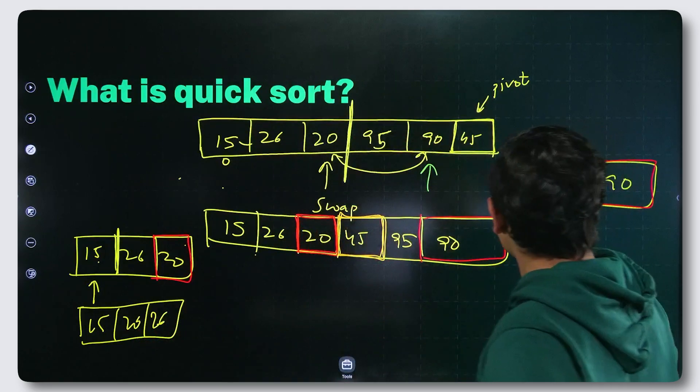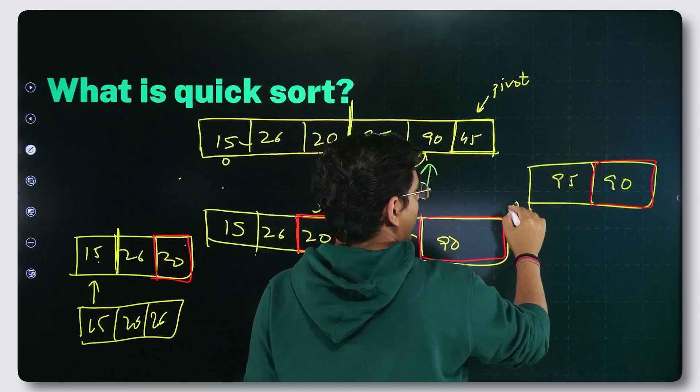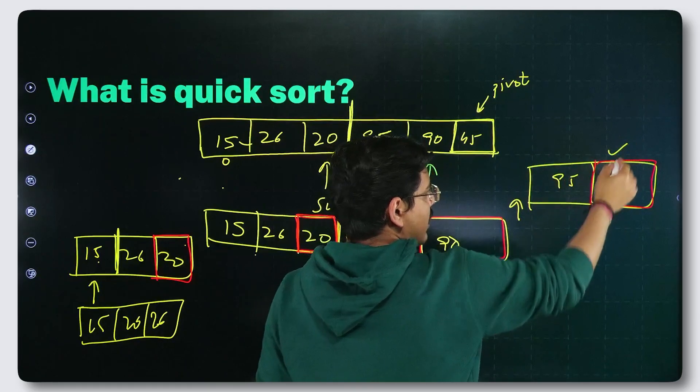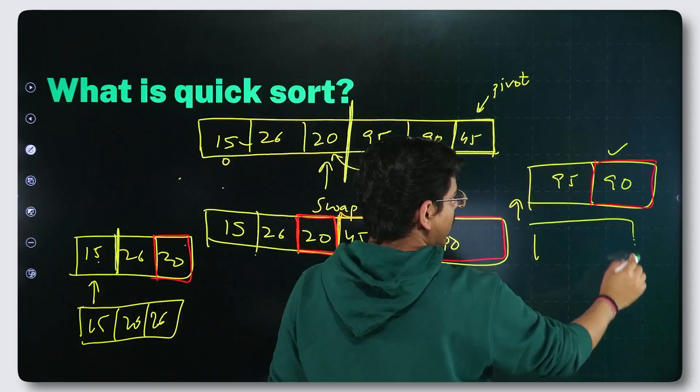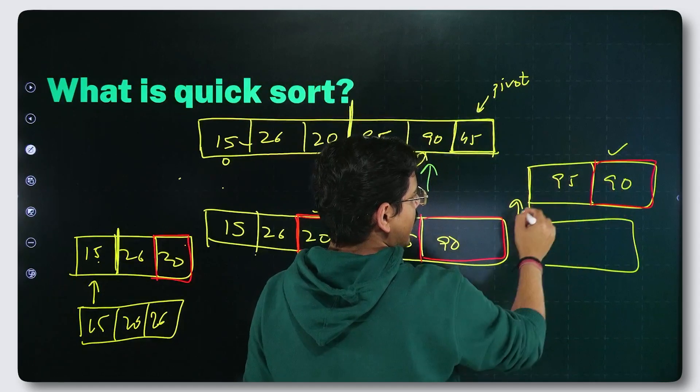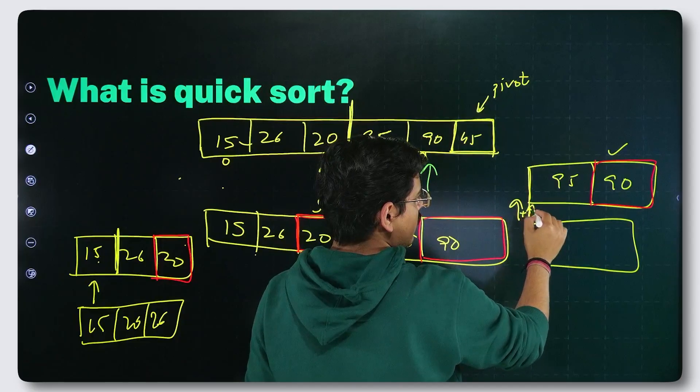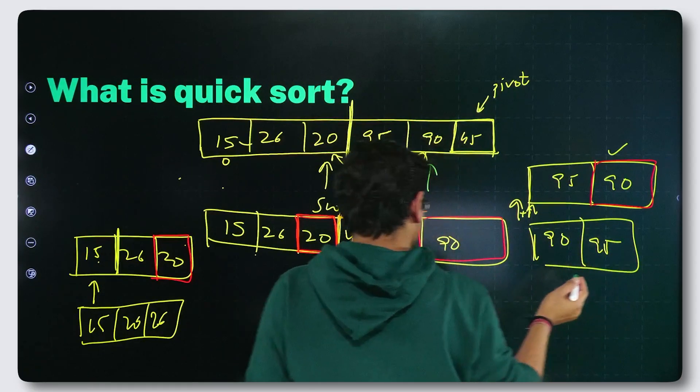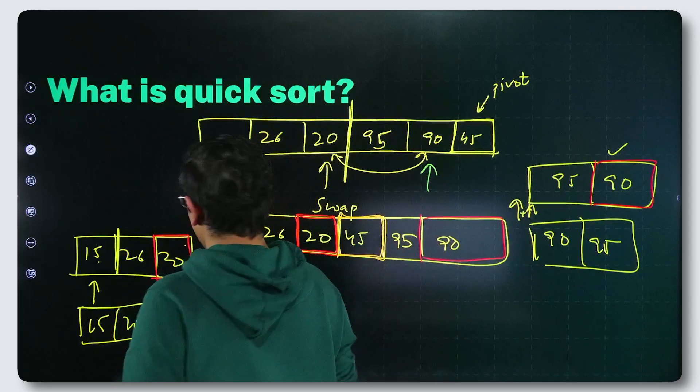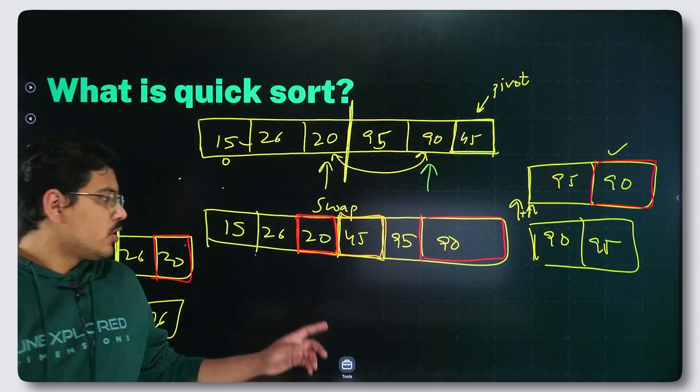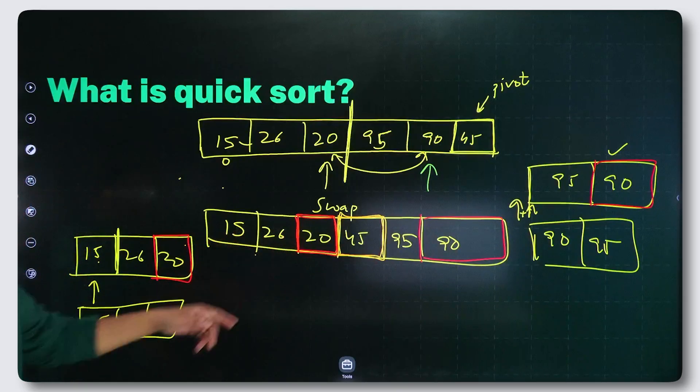And similarly, in this case, if I see swap pointers here, I see that this particular number is already greater than the pivot that I fixed. So I found that pivot's correct places. Here, after this, I told you to increment the swap pointer. So this is the correct place for pivot, 90 and 95. So in this case, if I tell you that now, I have sorted out both the partitions. I have sorted out this partition as well.